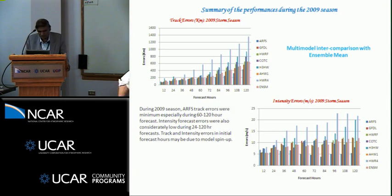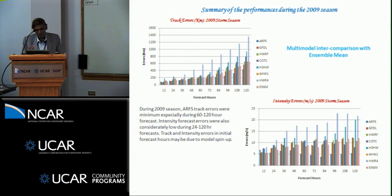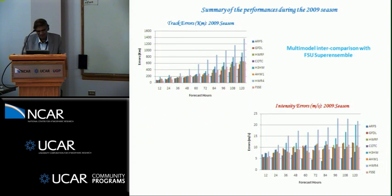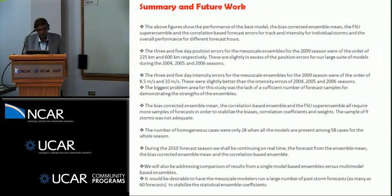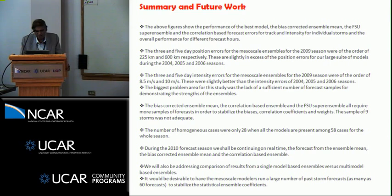Looking at the summary of performances for the 2009 season — track and intensity for the whole season — overall we found that ensembling does help. If you take the average of the various ensembling constructions, you can do better than the member models. The three- and five-day position errors for the mesoscale ensembles were on the order of 225 kilometers and 600 kilometers respectively, slightly in excess of the position errors for our large-scale suite of models during the same seasons.